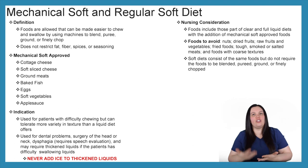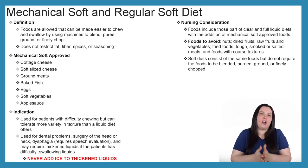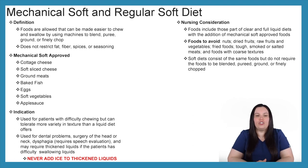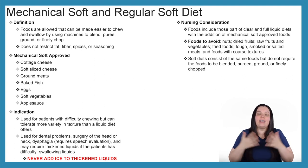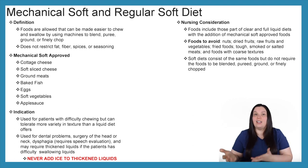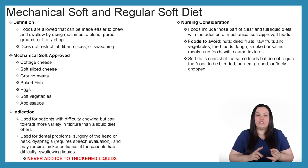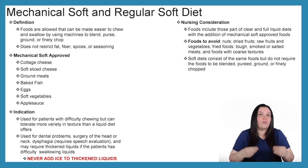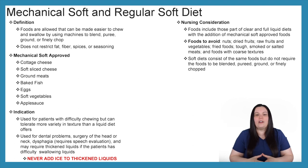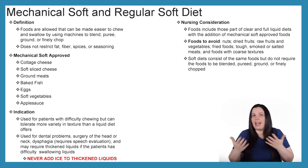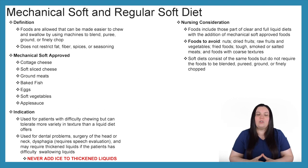The mechanical soft diet is used for patients with difficulty chewing who can tolerate more variety of texture than the liquid diet offers. It can be used for patients with dental problems, surgery of the head or neck, and patients with difficulty swallowing. Make sure you have a speech evaluation before progressing patients to this diet, because they may require thickened liquids depending on how severe the difficulty swallowing is.